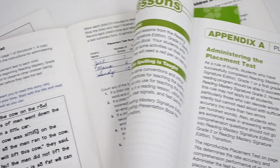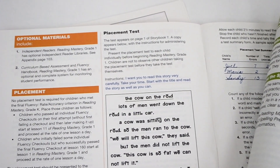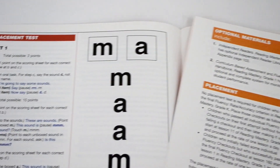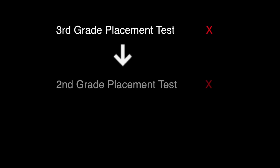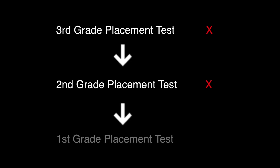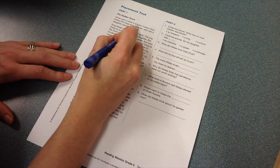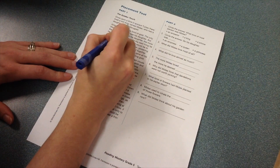In many cases, more than one test needs to be administered to determine a student's initial placement. For instance, a third-grade student that fails to pass the third-grade and second-grade placement tests for reading mastery should be given the first-grade test. If the student passes the first-grade test, then she should be placed into that level of the program. The length of the testing process varies depending on program and level.